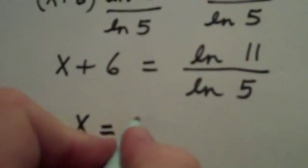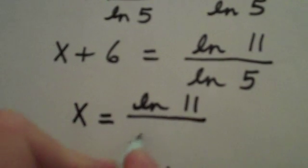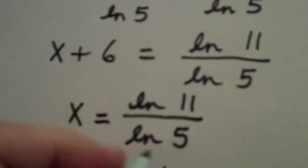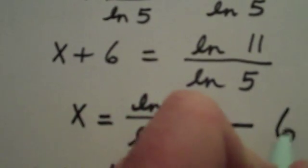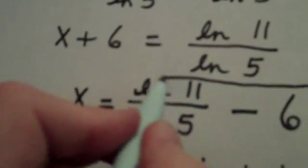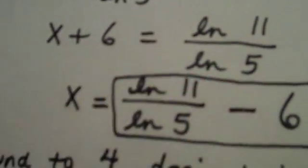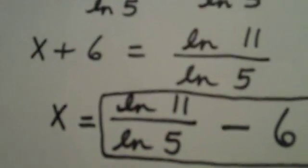Then to solve, I'm going to subtract 6. x equals the natural log of 11 divided by the natural log of 5 minus 6. This answer that I'm boxing in is the exact answer.